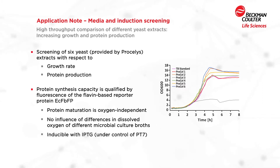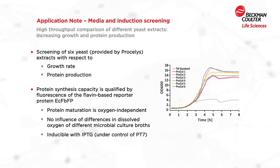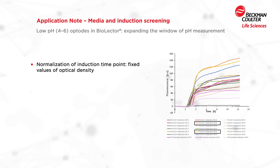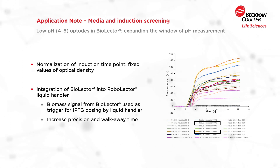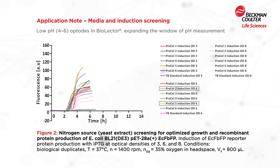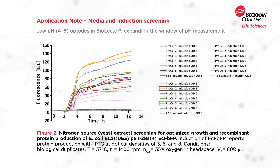Therefore, we used E. coli flavin-based fluorescent protein as a reporter protein for protein production, which is inducible with the inducer IPTG. With the integration of the Biolector into the Robolector, an automated induction dependent on the biomass concentration is feasible. The biomass signal from the Biolector is used as a trigger for IPTG dosing by the liquid handler, so all the different cultures are induced at the same biomass concentration. This increases precision and reduces hands-on time.